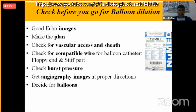Before balloon dilation, study the lesion on echo, make a sound plan, decide the appropriate sheath size to avoid vascular injury, and ensure the correct guidewire. The guidewire has a floppy end and a stiff part; the floppy part should be adequate inside the vessel and positioned correctly so the balloon is stable during inflation. Always check the burst pressure — exceeding it can cause balloon rupture. All this information is available from the packaging.